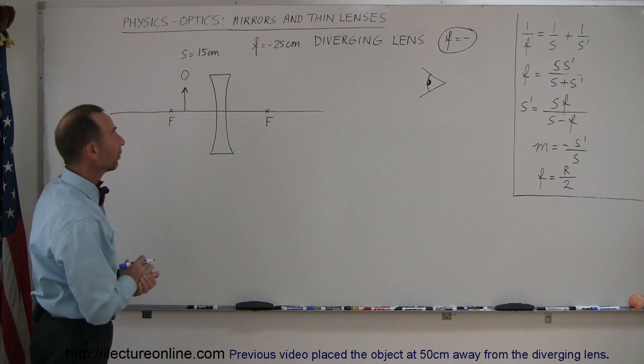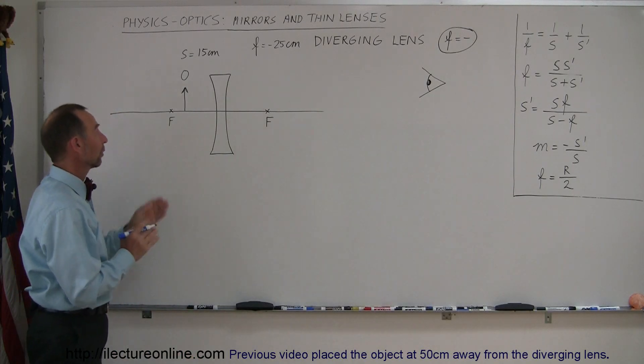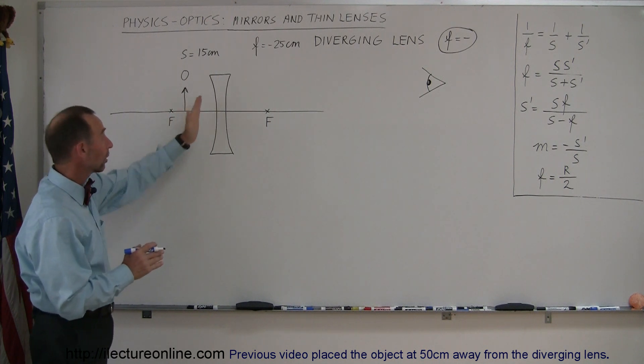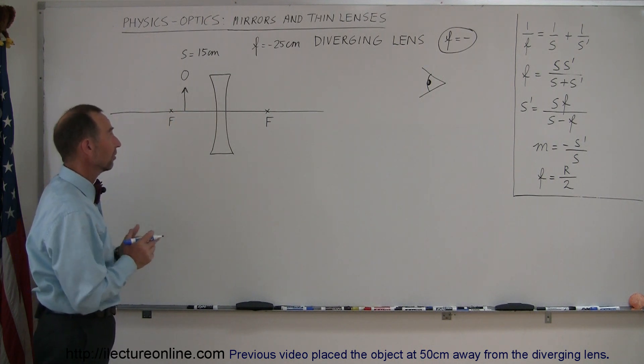And here's our second example with a diverging lens. In this case, we have placed the object inside the focal point, in other words, closer to the lens than the focal point of this lens.